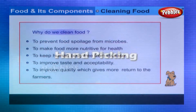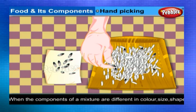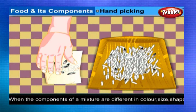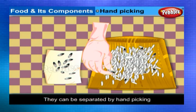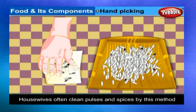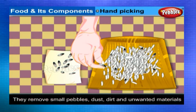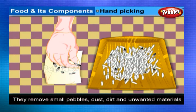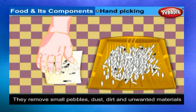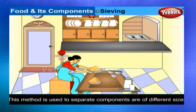Handpicking: When the components of a mixture are different in colour, size, and shape, they can be separated by handpicking. Housewives often clean pulses and spices by this method, removing small pebbles, dust, dirt, and other unwanted materials.